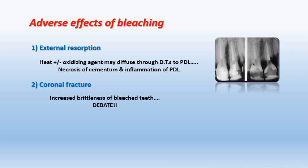The second adverse effect is coronal fracture. There is a debate among scientists — some say bleaching increases the brittleness of teeth, while others say bleaching is very safe and does not cause brittleness. However, for a tooth to be bleached without crowning, especially for aesthetic reasons on anterior teeth, there must be a large amount of sound tooth structure. If insufficient, the tooth should be crowned, as more sound tooth structure increases coronal fracture resistance.